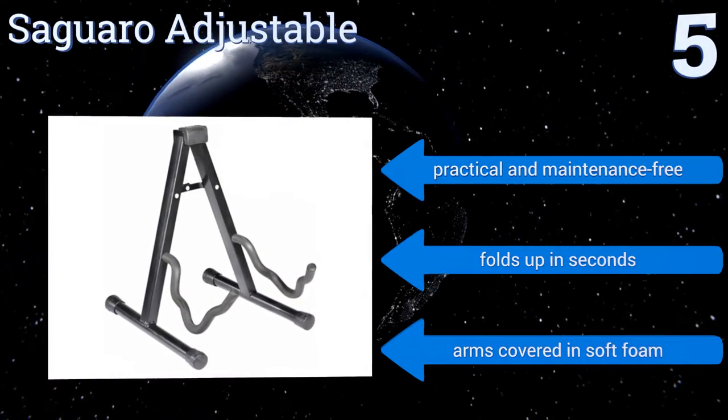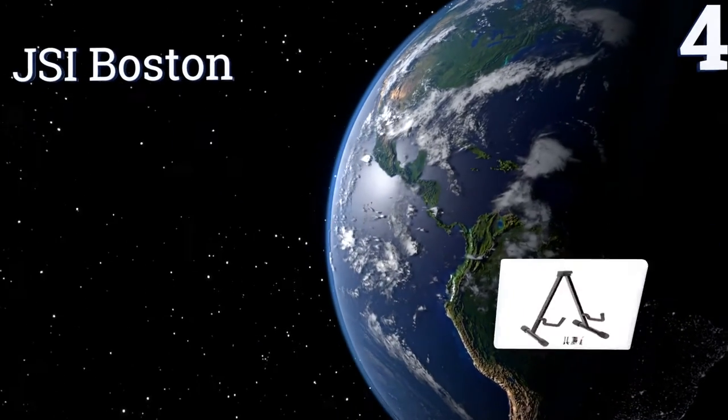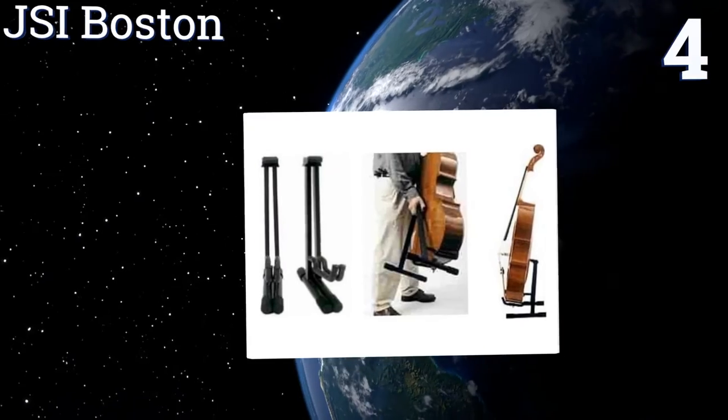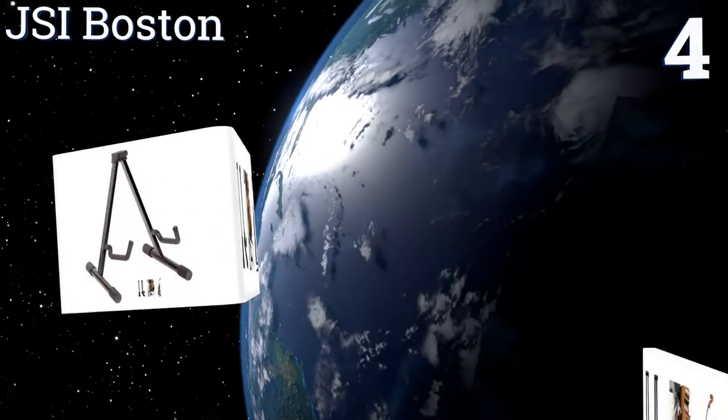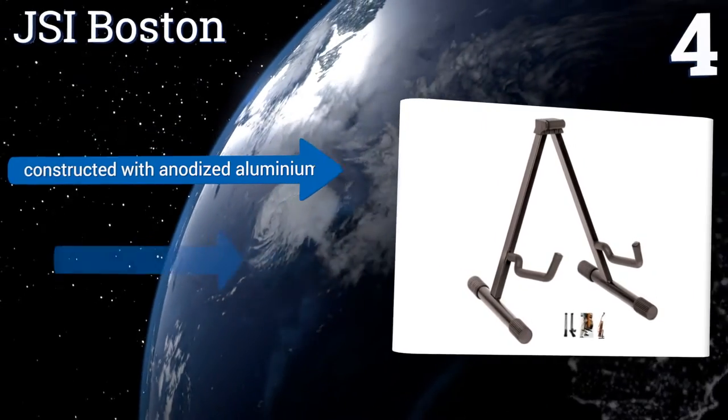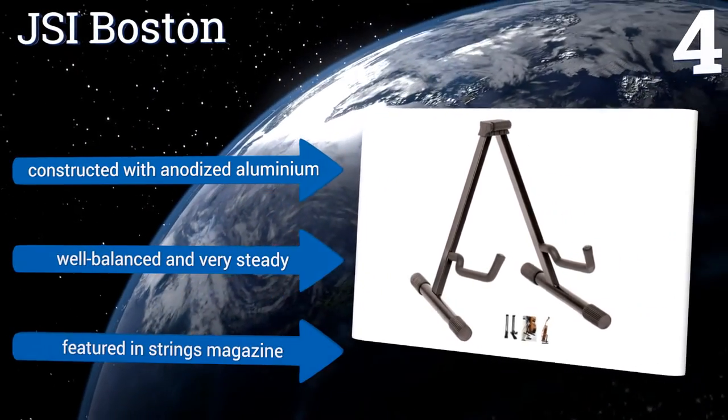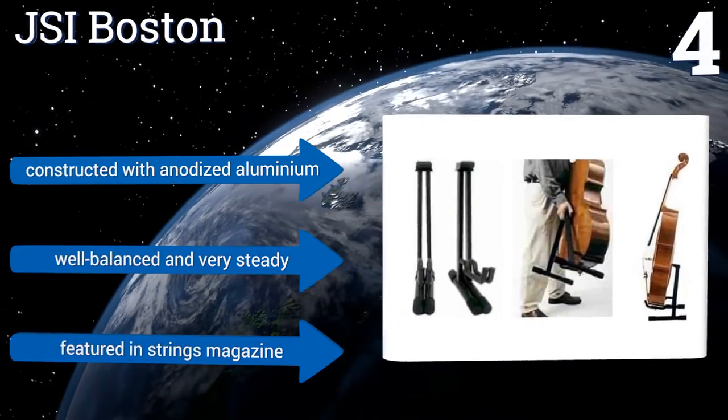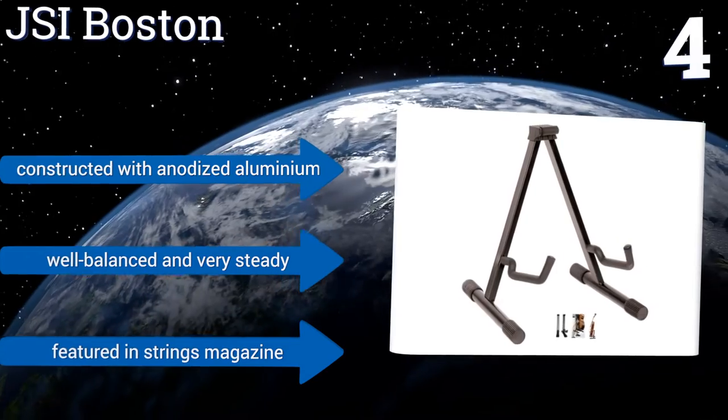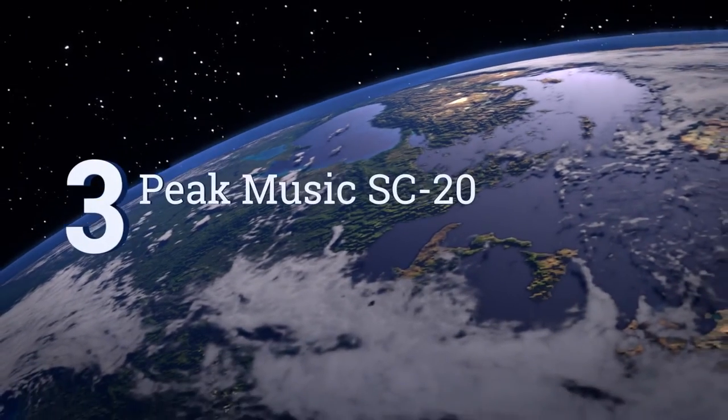Halfway up our list at number four, professional in appearance and performance, the JSI Boston is used in showrooms and is known for high quality craftsmanship. While it doesn't feature a bow storage area, it's highly space efficient and inconspicuous even when it's holding an instrument. It's constructed with anodized aluminum and is well balanced and very steady. It was featured in Strings Magazine.